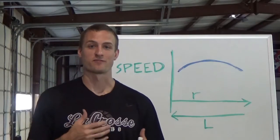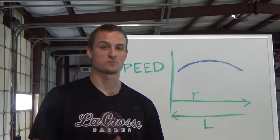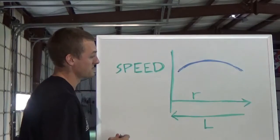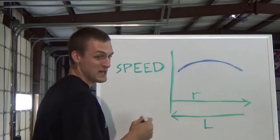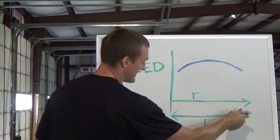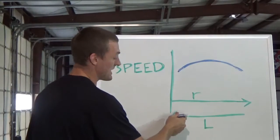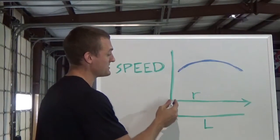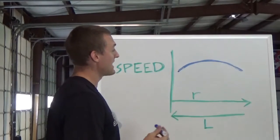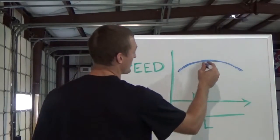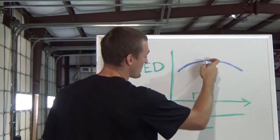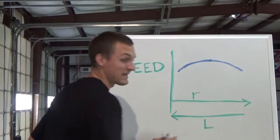If we were going to make a graph of rate, length, and speed, we'd have something like this. We have speed on the vertical axis and on the horizontal axis — increasing in this direction we have rate, but increasing in this direction we have length. So as you gain one, you lose the other. Your top speed is going to occur up here, and that's when you find the correct balance between rate and length.